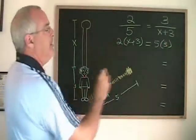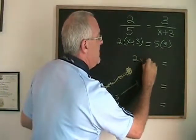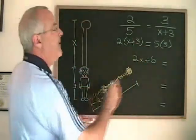Two times X plus three is two X plus six, and five times three is fifteen.